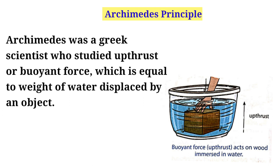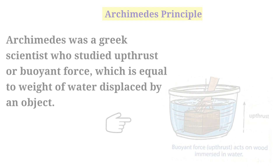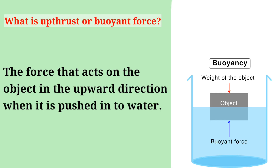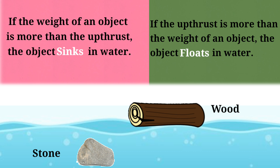Archimedes' principle. Archimedes was a Greek scientist who studied upthrust or buoyant force, which is equal to the weight of water displaced by an object. Upthrust or buoyant force is the force that acts on an object in the upward direction when it is pushed into water. If the weight of an object is more than the upthrust, the object sinks. If the upthrust is more than the weight of an object, the object floats in water.